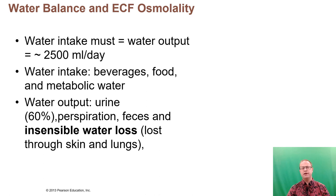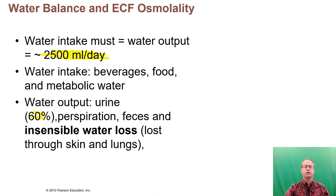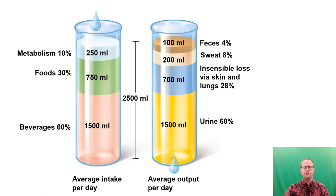Now we're going to talk about water balance. By definition, water output and water intake must balance one another. For an average person, we're getting rid of about 2.5 liters per day, and only about 60% of that is urine. Water intake comes from beverages, food, and metabolic water production. Water output is about 60% urine, with the rest lost through perspiration, feces, and insensible water loss — water lost through vapor in breathing and non-detectable moisture through the skin.